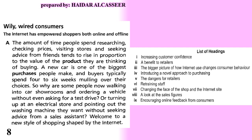Paragraph A of the second exercise: 'The amount of time people spend researching, checking the prices, visiting stores and seeking advice from friends tends to rise in proportion to the value of the product they are thinking of buying.' The four phrases — researching, checking prices, visiting stores, seeking advice — together give the meaning of 'purchasing.' So the answer is number four: 'introducing a novel approach to purchasing.'